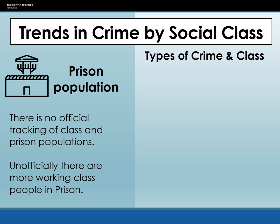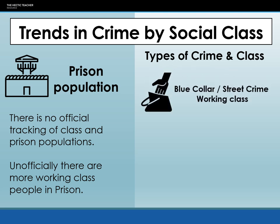Looking at the types of crime, working class people tend to be associated with and in prison for what we refer to as blue collar or street crime. That includes things like theft, burglary, violence, and sexual crimes. These are crimes that sometimes have a monetary gain — the utilitarian type crimes — but they're also crimes that are more detectable. Somebody knows when they've been a victim of theft; somebody knows when they've been a victim of violence. So these crimes tend to be more detectable.